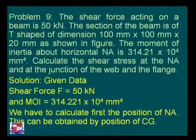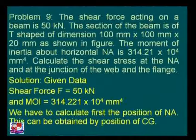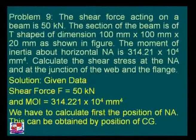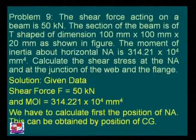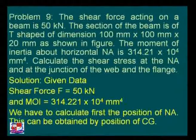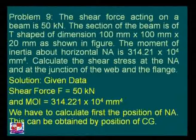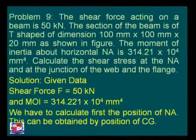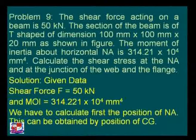We are asked to calculate the shear stress at the neutral axis and at the junction of the web and flange — in other words, to plot the shear stress distribution diagram. The given data: F = 50 kilo Newton, the moment of inertia as given, and the T-section figure as provided. The intention is to first find the center of gravity or centroid of the section.